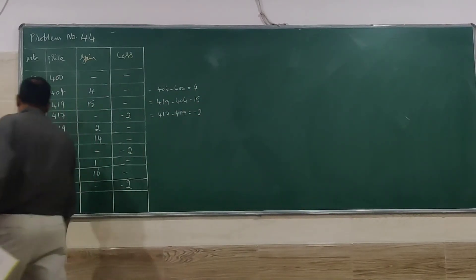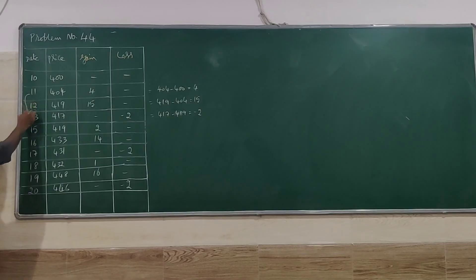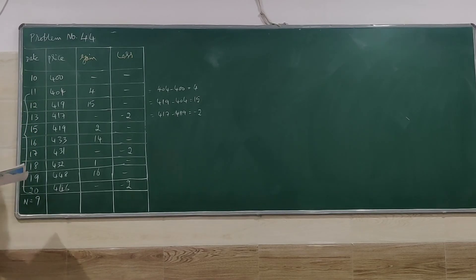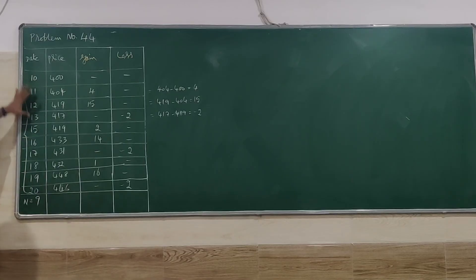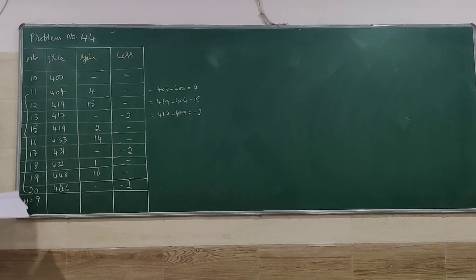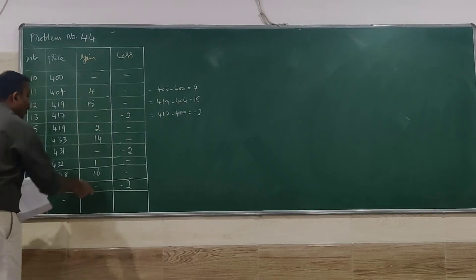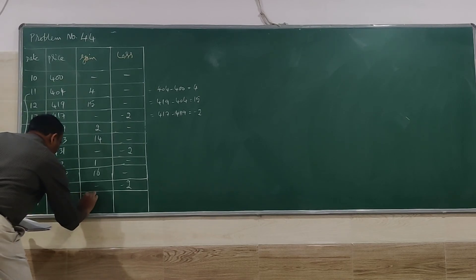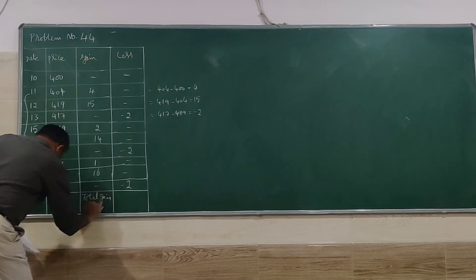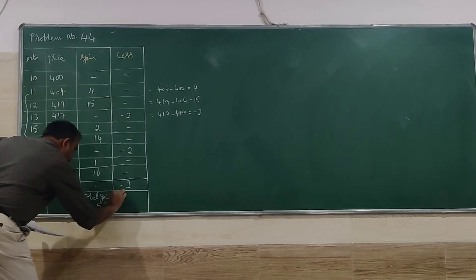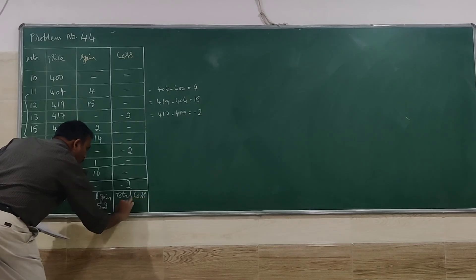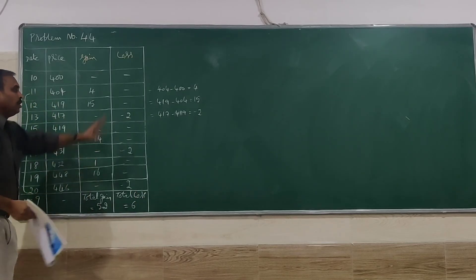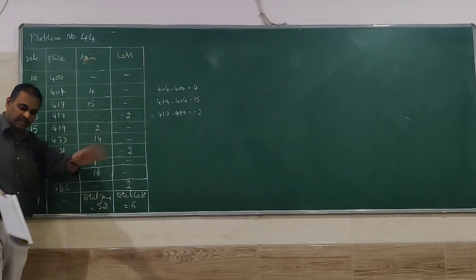We have taken price data from the 11th to the 20th day, so n is equal to 9. We have 10 days of price information, but gain or loss can only be calculated for 9 days because we cannot find the change for the first day. Adding all the gains, the total gain is 52 rupees. The total loss is 6 rupees — no need to use the minus sign, just 6 rupees.